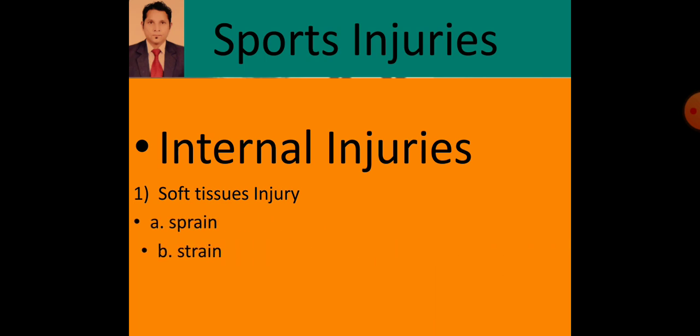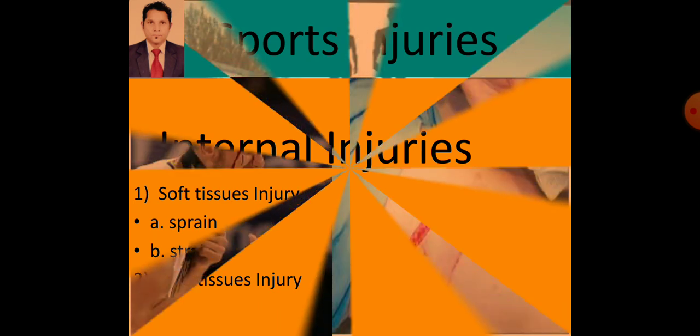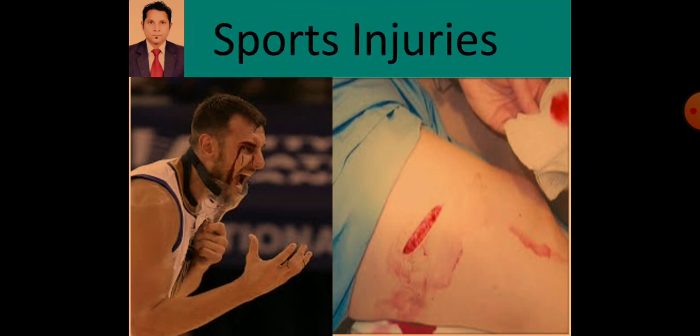Moving to internal injuries — soft tissue injuries also include sprain and strain. Sprain and strain are soft tissue injuries that are internal in nature. The second category is hard tissue injuries.